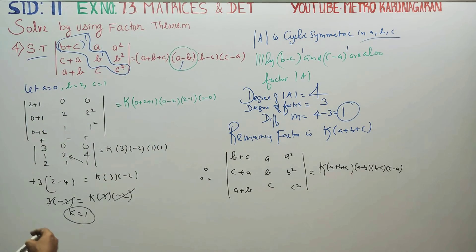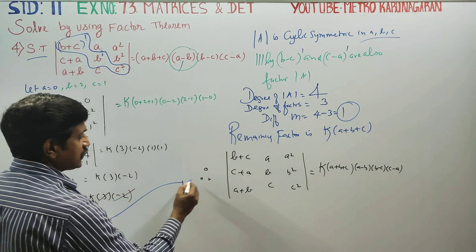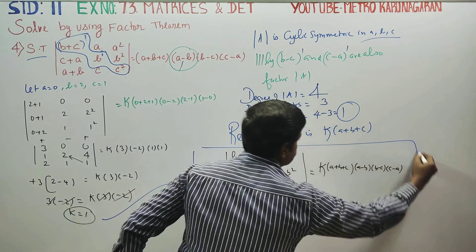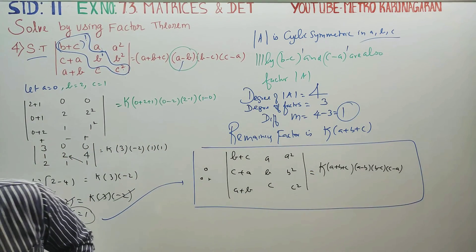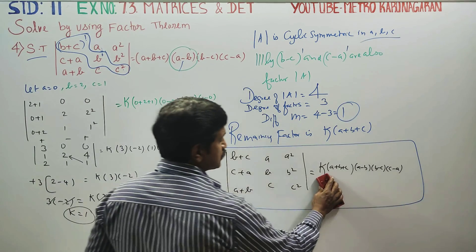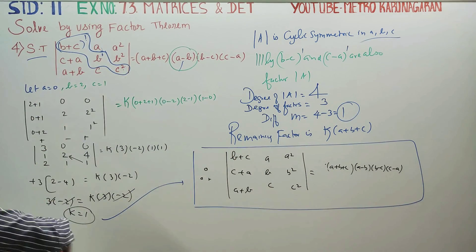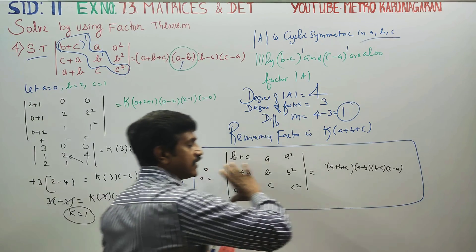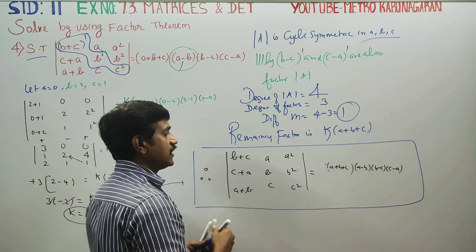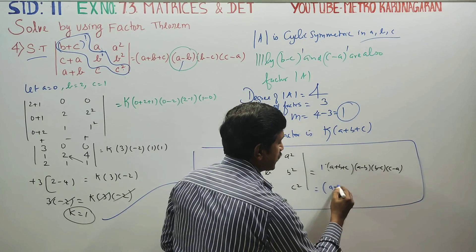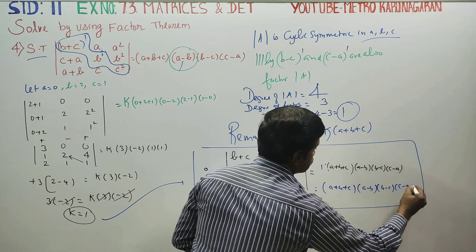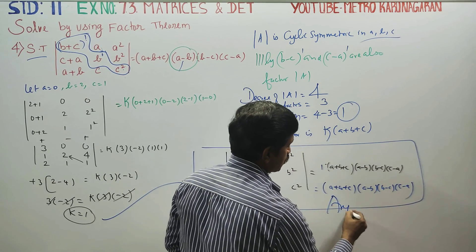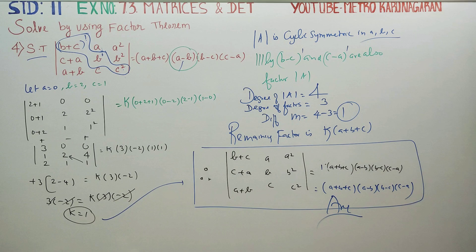Now the final answer is confirmed. After finding k=1, substitute back: therefore determinant A equals 1 × (a+b+c)(a−b)(b−c)(c−a), which equals (a+b+c)(a−b)(b−c)(c−a). This completes the proof by factor theorem. Thank you.